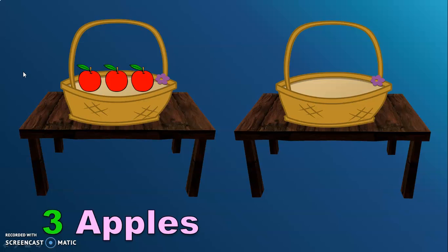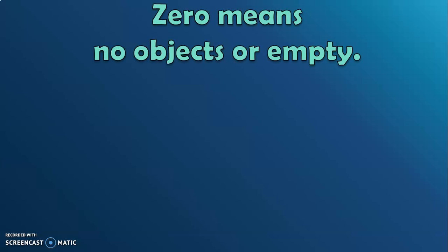In the second basket, we do not have any fruits. We can say that the basket is empty or there are no objects in the basket. The number zero is written like this. Zero means no objects or empty.